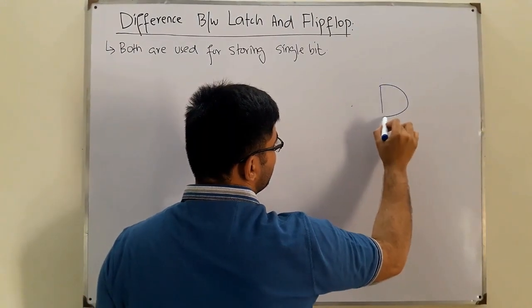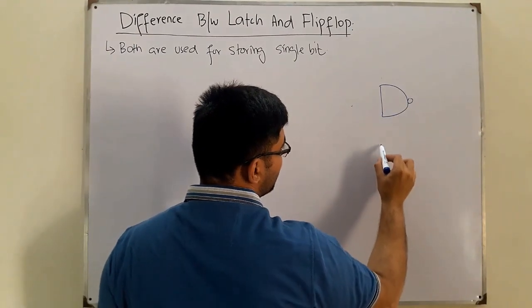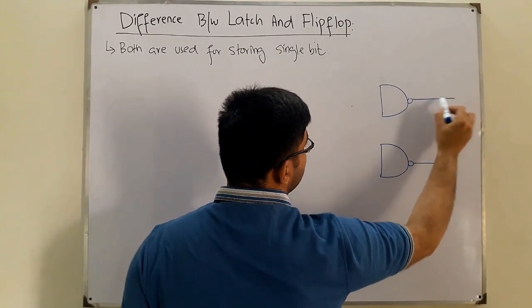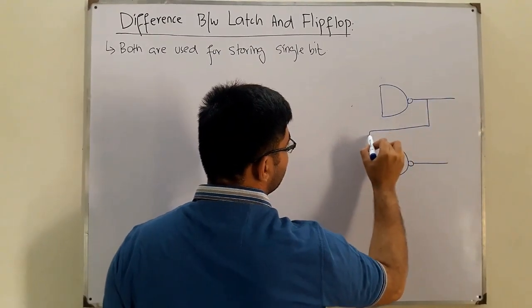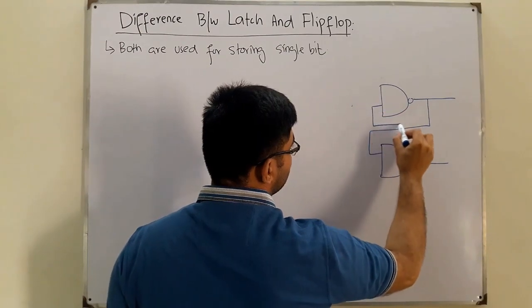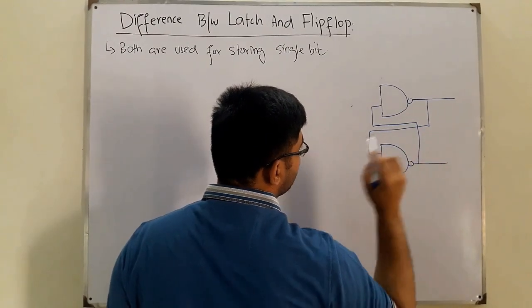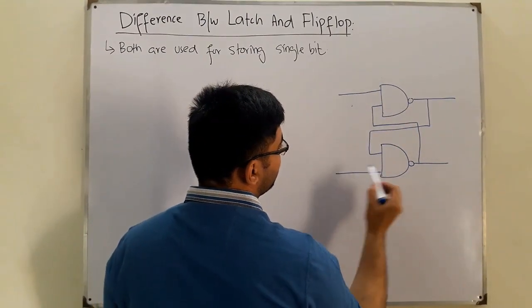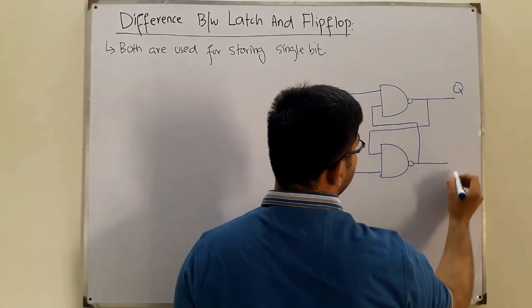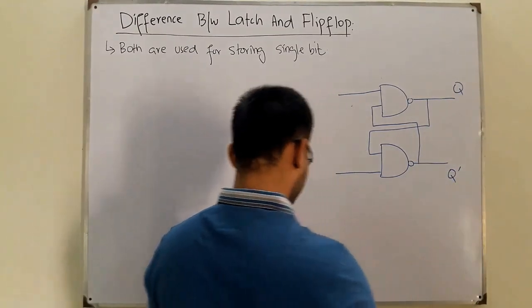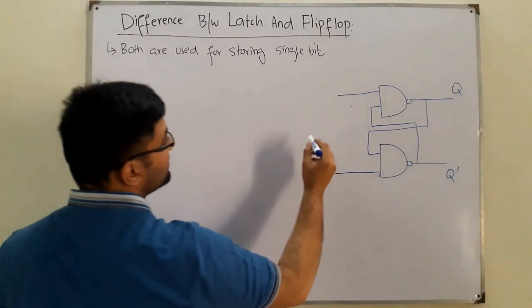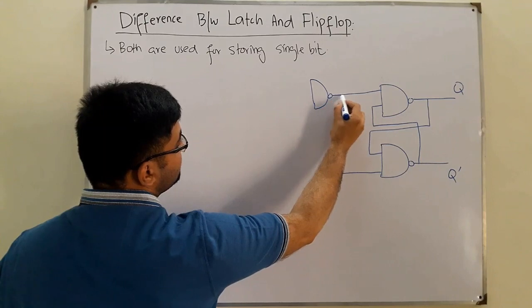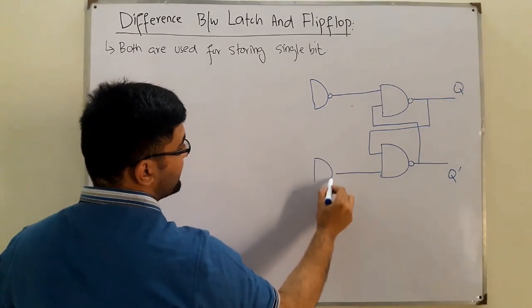I believe you have seen this circuit before. It had one input over here and one input over here, with outputs Q and Q complement.